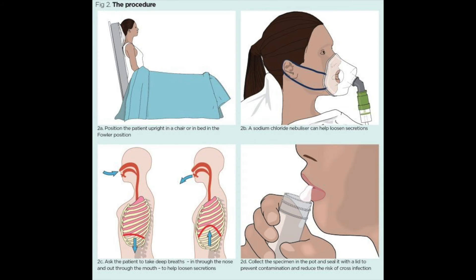For patients admitted into the hospital who have difficulty spitting out sputum, the patient is set into a Fowler's position in the bed. A sodium chloride nebulizer is given to the patient to loosen up the secretions. Then the patient is asked to take deep breaths through the nose, breathe out through the mouth, and spit out the sputum into a container for examination.